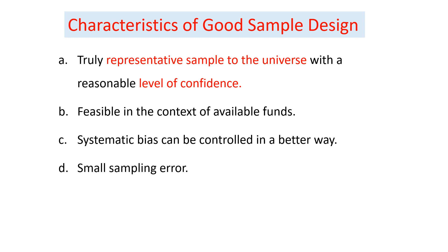The first characteristic is that it should be truly a representative sample to the universe or target population with a reasonable level of confidence. We have to assure its representativeness by required level of confidence. The level of confidence may vary according to the disciplines — in social science or businesses, 95% is acceptable, whereas in medical science or natural science, 99% is usually acceptable.